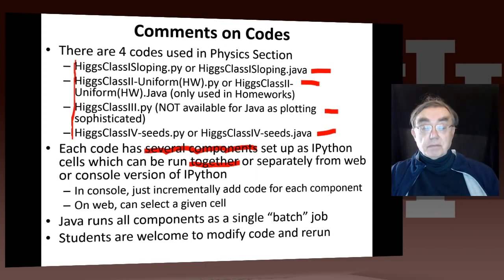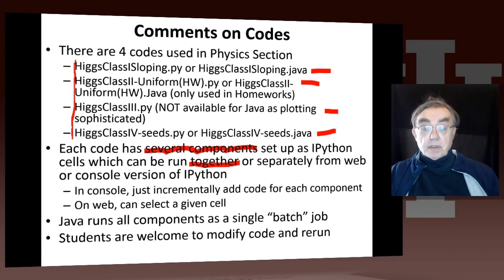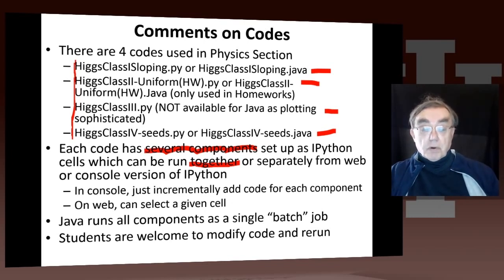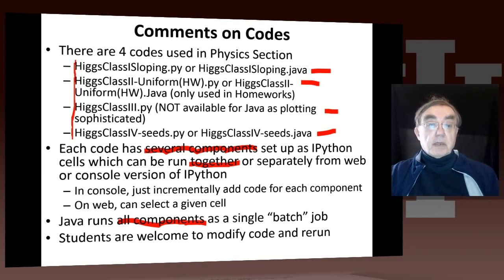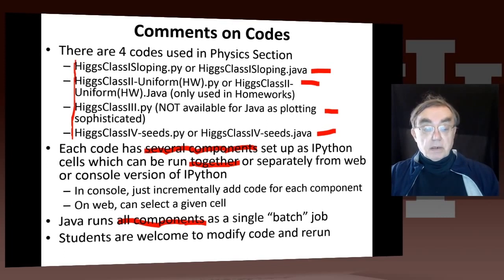When I use the console, I just cut and paste the different components separately into IPython and run them separately. On the web, there is an option to select a given cell. Java will run all components at the same time as a single batch job. In each case, the simplest thing to do is just run the code. But you're also welcome to modify the code and change the parameter sizes so that you get more data or less data and see what the impact is.